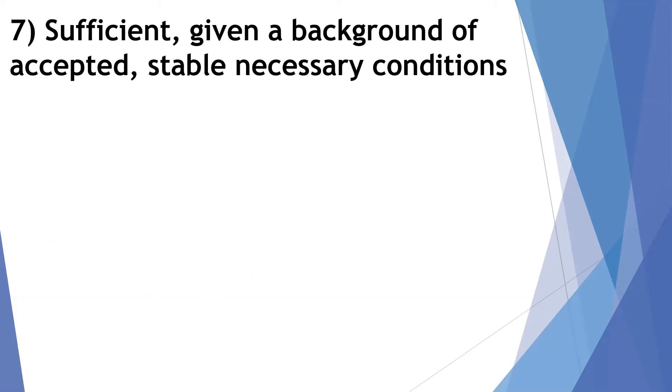The seventh one is a modification of sufficient. So, sometimes we would think something sufficient, you know, you do that, and you get the effect. But there has to be given a background of accepted, stable, necessary conditions in order for that to be sufficient.